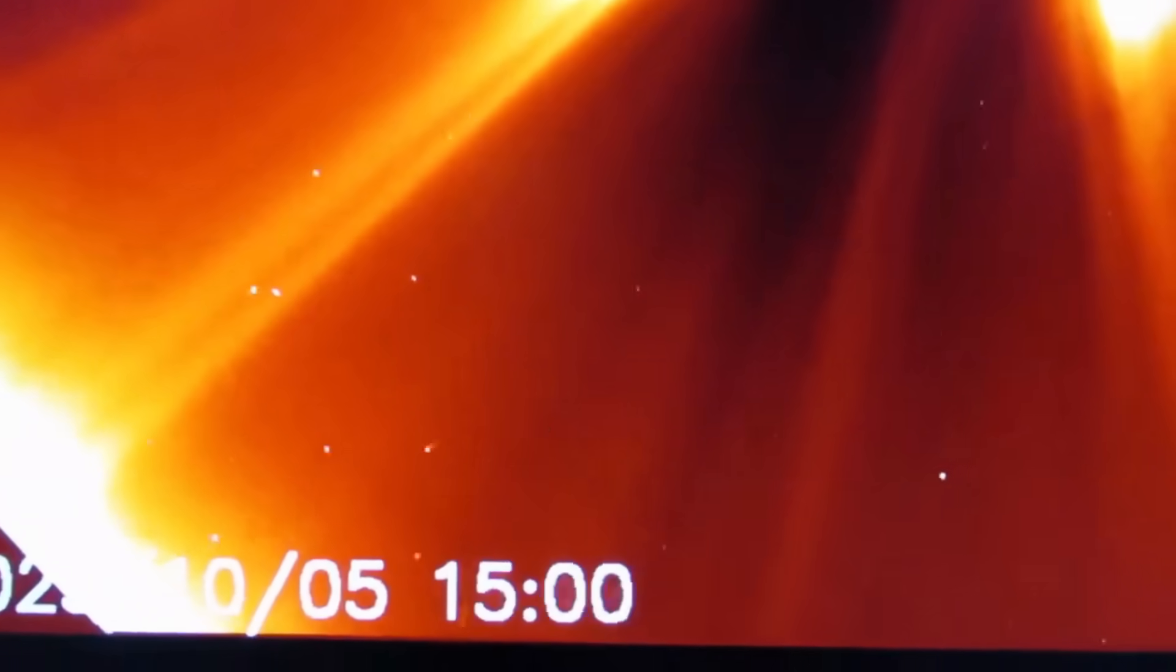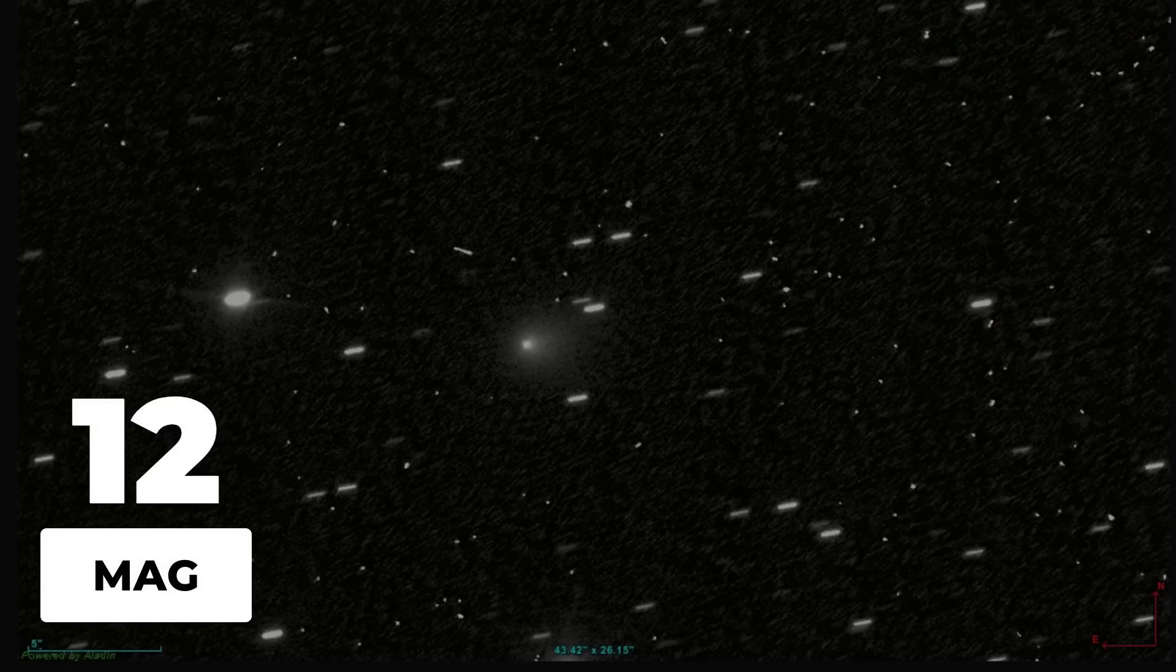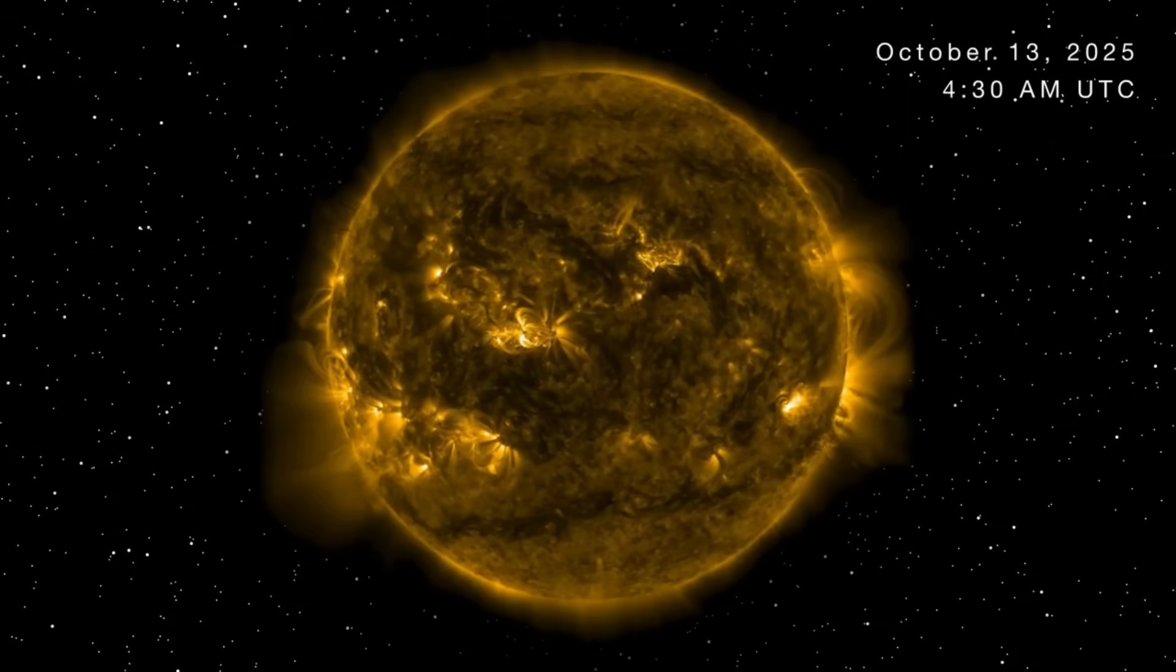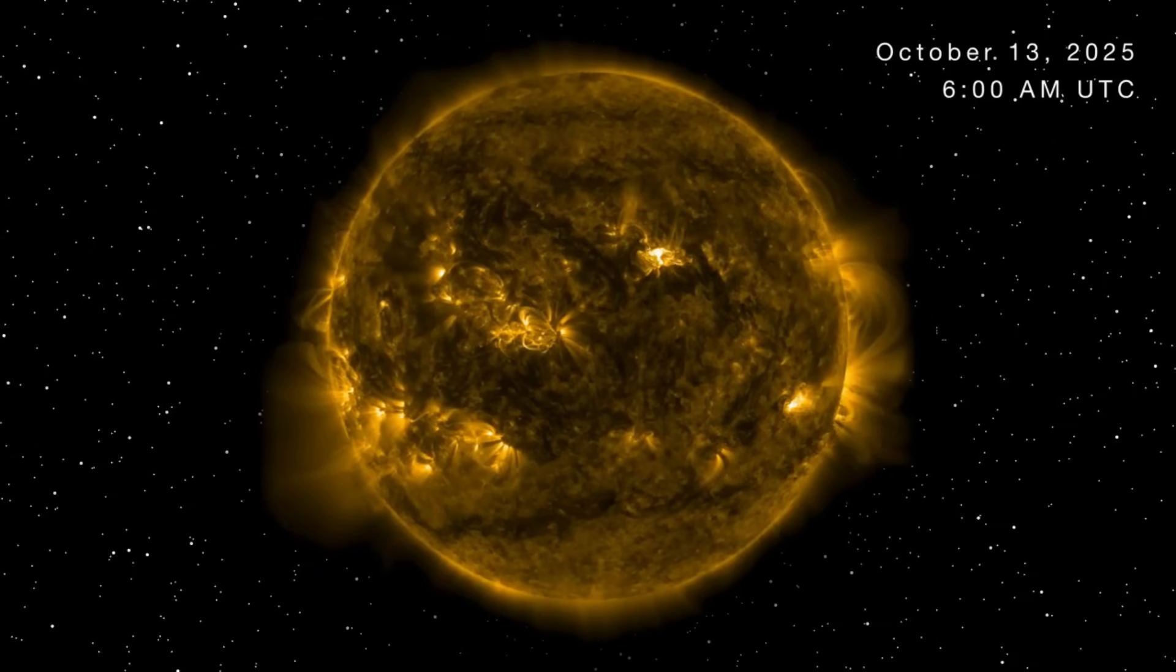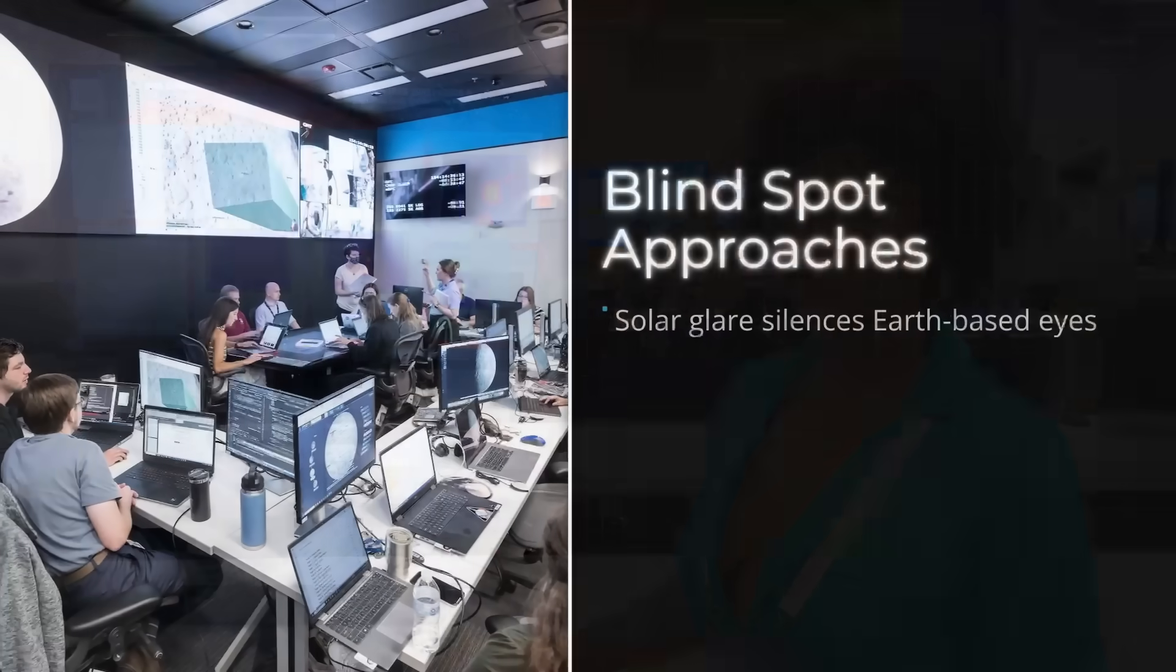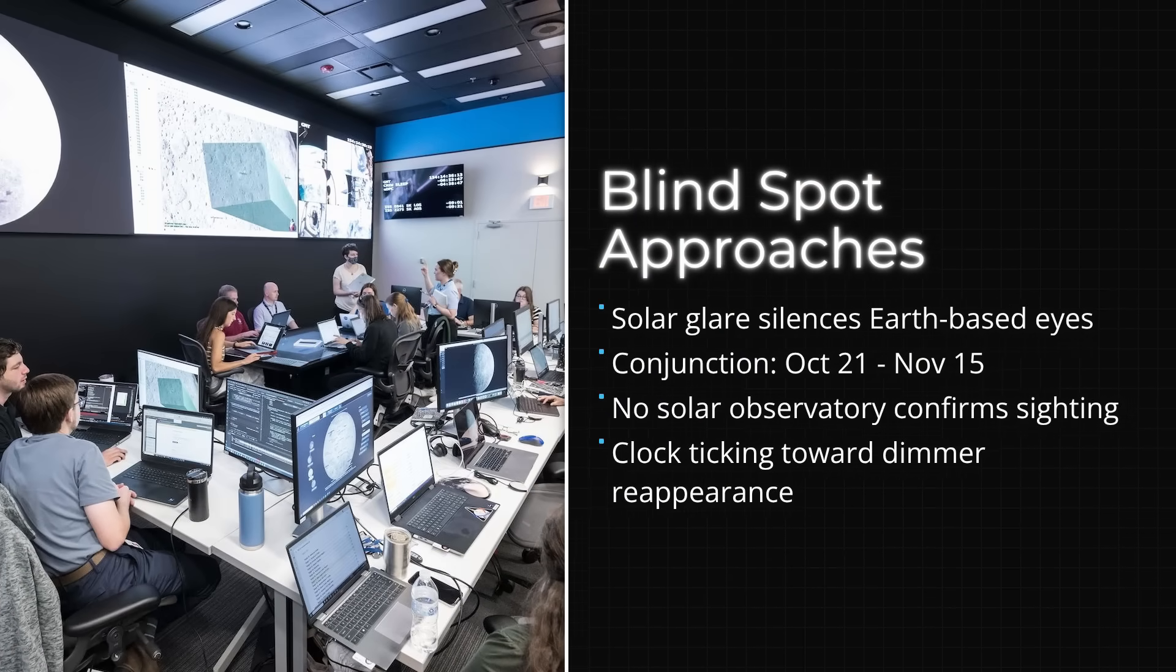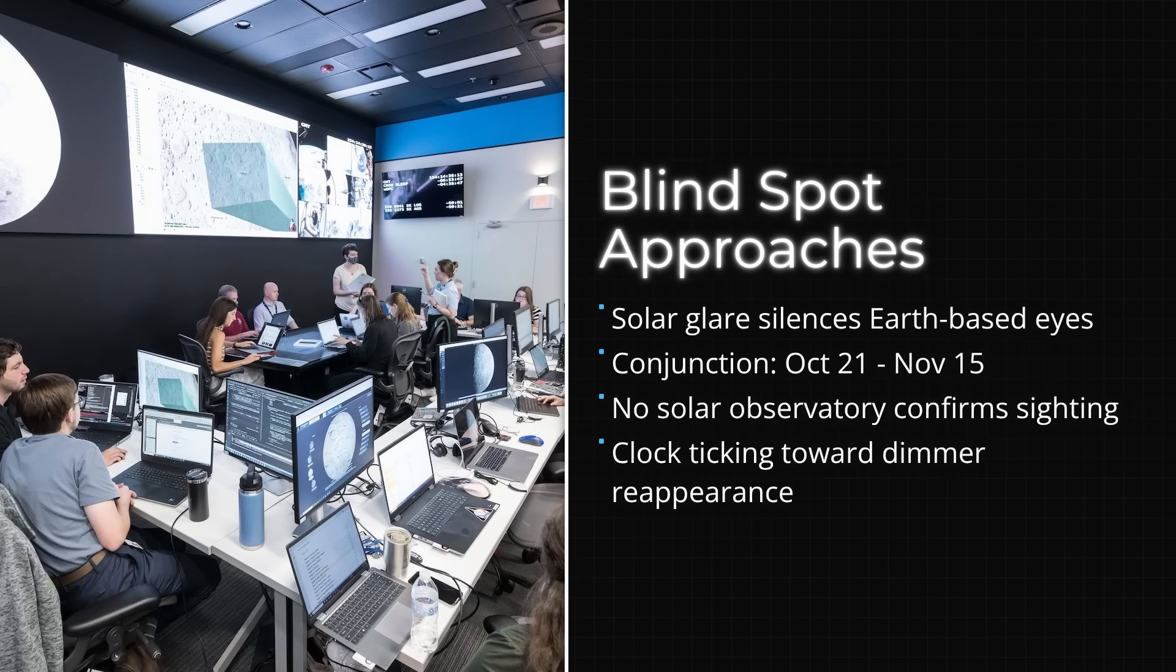Coronagraphs—those specialized solar observatories designed to block the Sun's blinding core—offer little hope. At magnitude 12, 3i-Atlas is simply too faint and too compact to stand out against the turbulent brightness of the corona. Deep background subtraction and stacking techniques, so effective for brighter sun-grazers, fall short here. No confirmed detections have surfaced from SOHO, STEREO, Parker Solar Probe, or Solar Orbiter during this window.